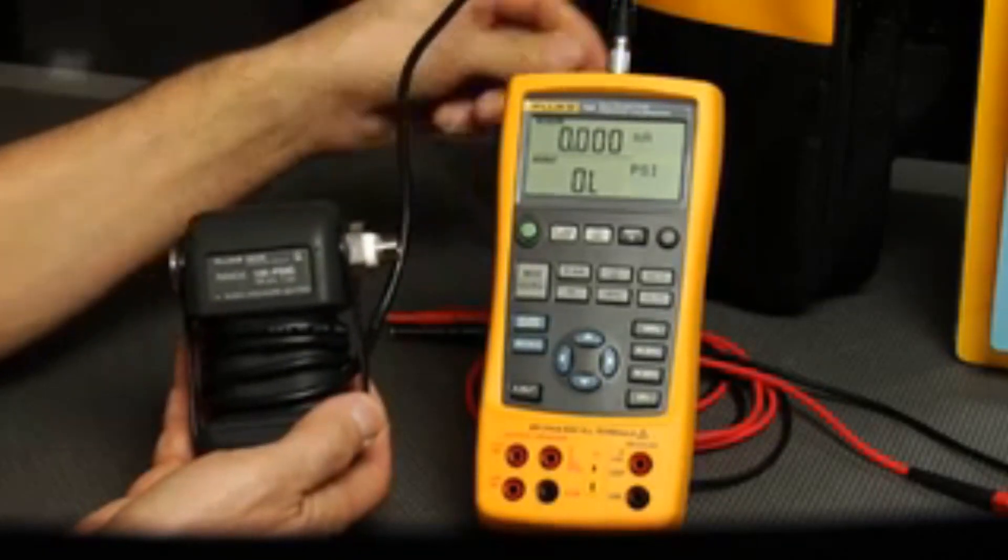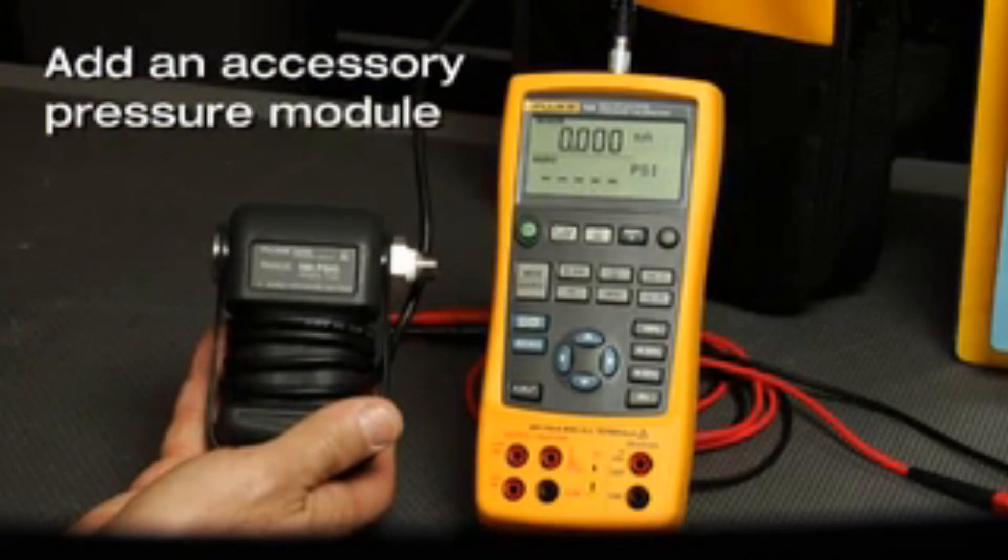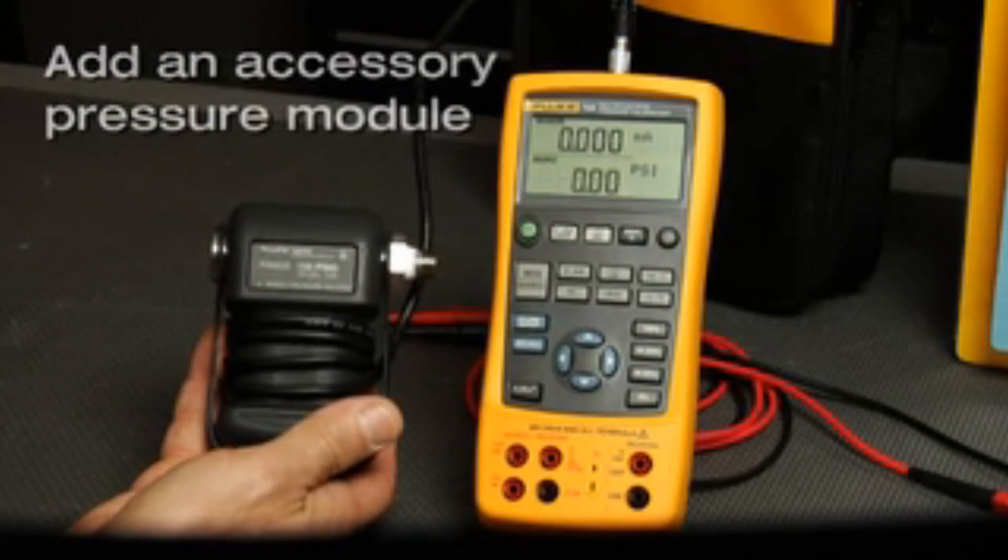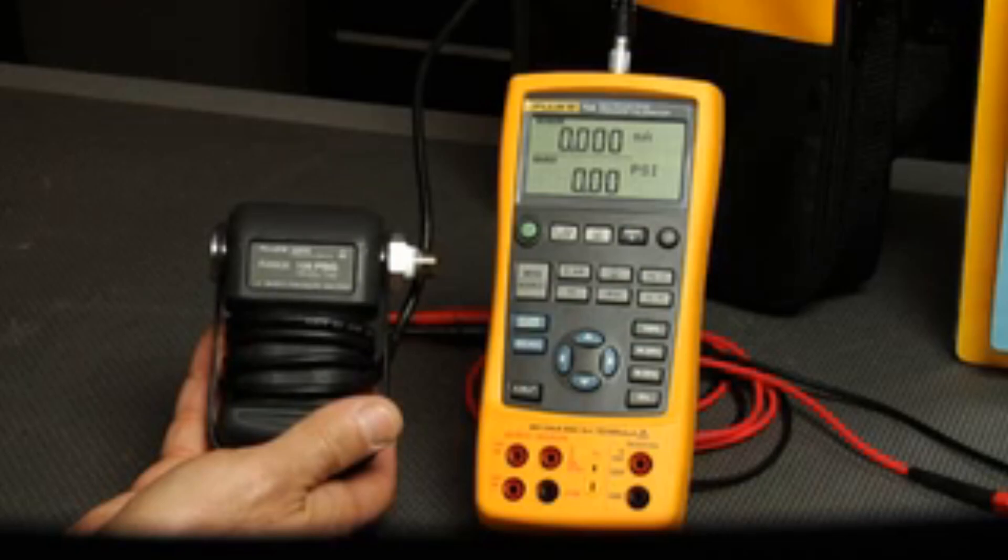Also, we've got your pressure workload covered. You can add an accessory pressure module to test pressure devices. Choose from any one of the 29 pressure ranges.